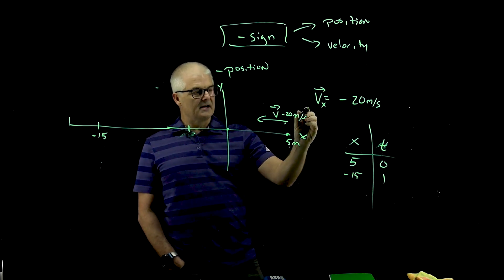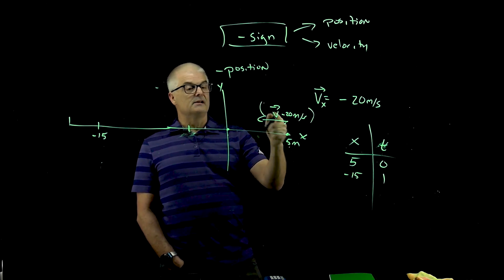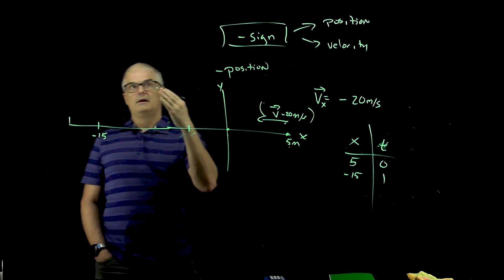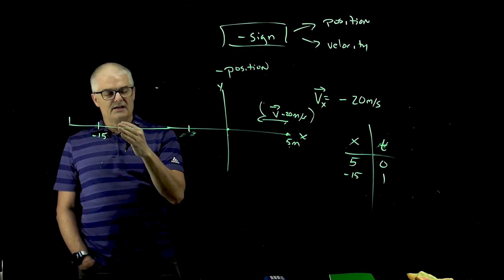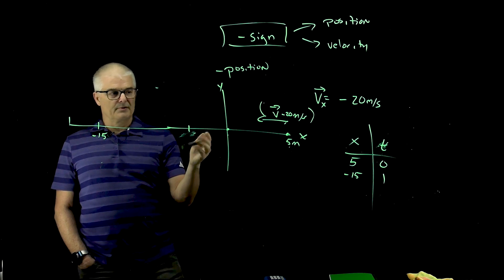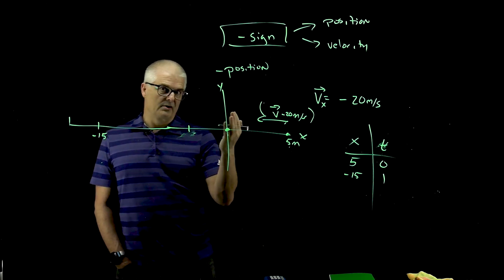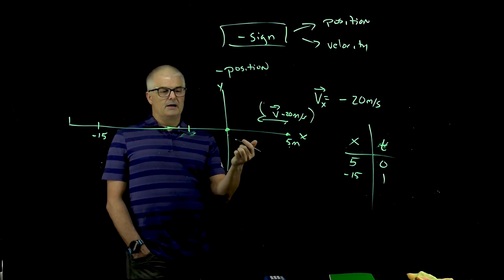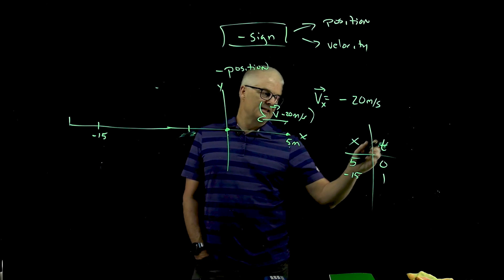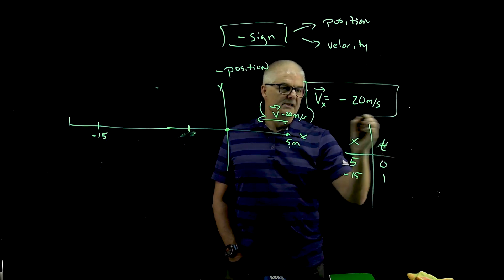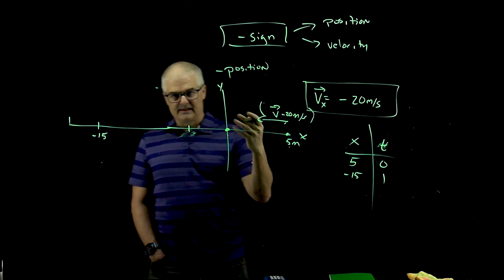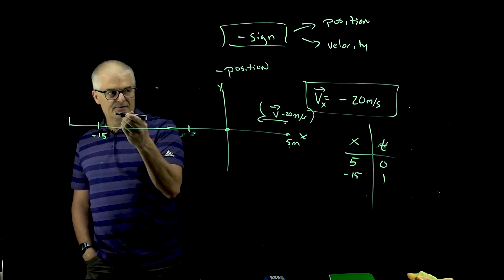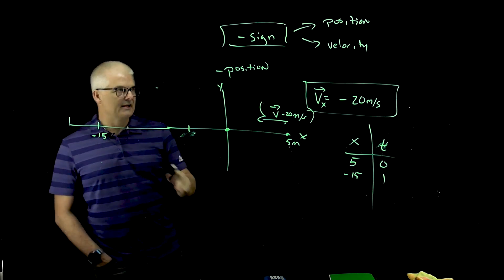So when you see a negative sign in velocity or position, that is indicating where they are on the coordinate plane. Obviously it's important you define where your starting point is. That's the key to understanding this is that, especially with velocity, when you have a negative velocity, it means you're moving in the opposite direction. So don't panic when you get a negative number.